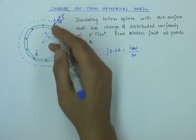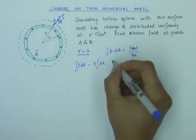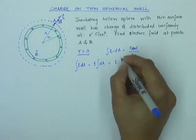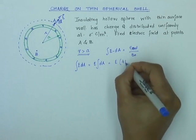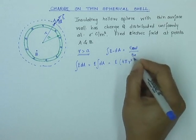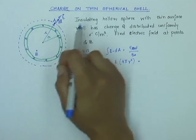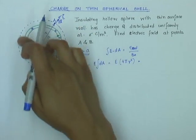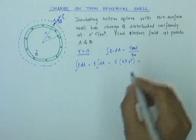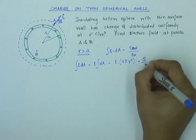This essentially is the surface area of my Gaussian sphere, and that is E times 4 pi R squared. That equals Q enclosed. The outer Gaussian sphere encloses my entire hollow sphere, that is, encloses the entire charge Q over epsilon zero.